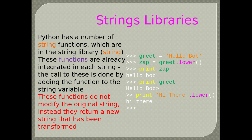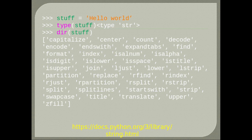String libraries: Python has a number of string functions in the string library. These functions are already integrated in each string object. They are called by adding the function name to the string variable with a dot. These functions do not modify the original string — instead they return a new string that has been transformed. You can capitalize it, count, see what it ends with, find out if it is uppercase, split, translate, and many others.